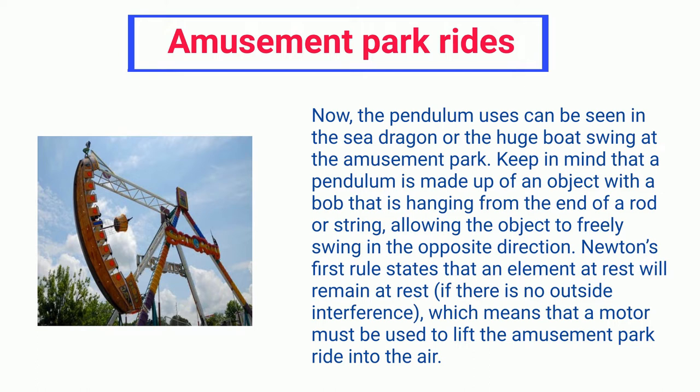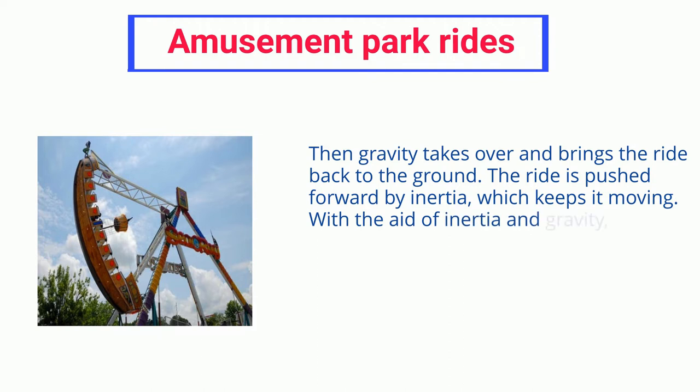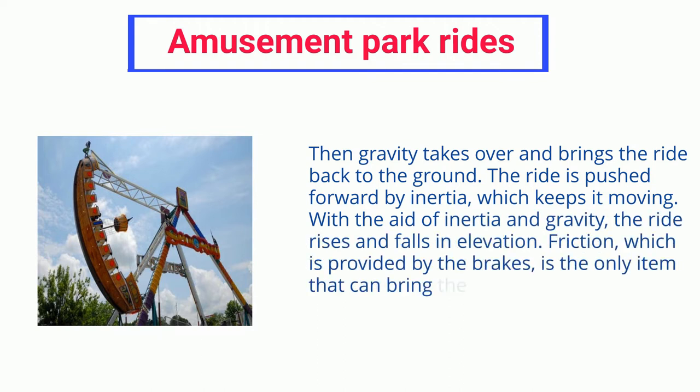Newton's first rule states that an element at rest will remain at rest if there is no outside interference, which means that a motor must be used to lift the amusement park ride into the air. Then gravity takes over and brings the ride back to the ground. The ride is pushed forward by inertia, which keeps it moving. With the aid of inertia and gravity, the ride rises and falls in elevation. Friction, which is provided by the brakes, is the only item that can bring the ride to a complete stop.